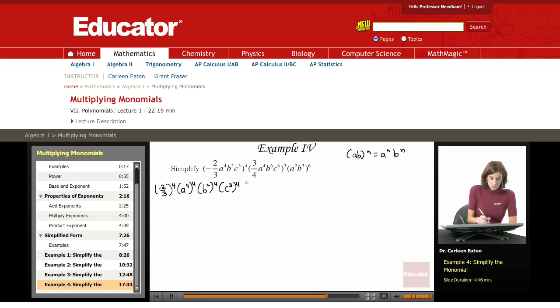Starting with the second expression, that's three-fourths to the third power, a to the fourth to the third, b to the sixth to the third, and then c to the eighth to the third. This third expression, I've got a squared to the sixth, and b cubed to the sixth.